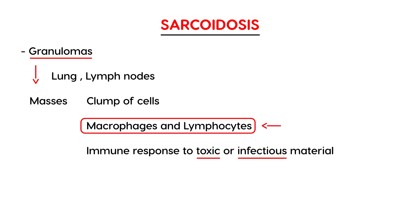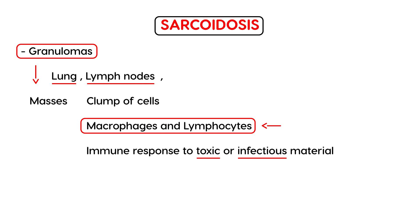The problem with sarcoidosis is that the body is unable to stop this immune response, and it spreads from organ to organ. That is the main pathophysiology. As a result, you get granulomas in different parts of the body — most commonly the lungs, lymph nodes, skin, and eyes. These granulomas have a special name: they are called non-caseating or non-necrotizing granulomas.